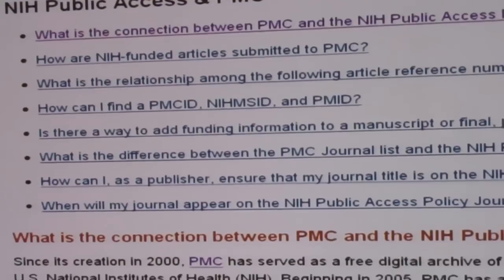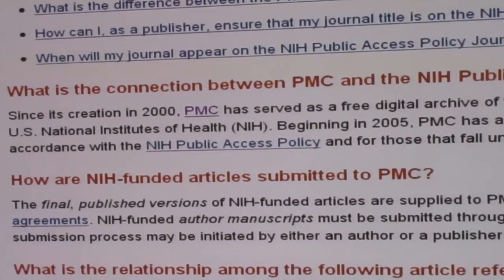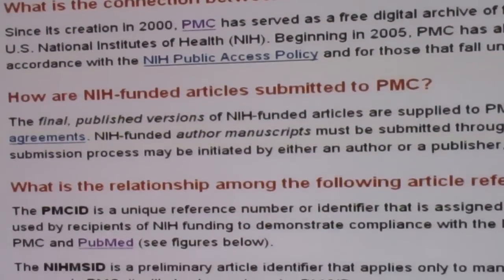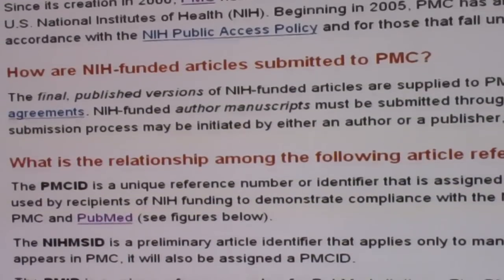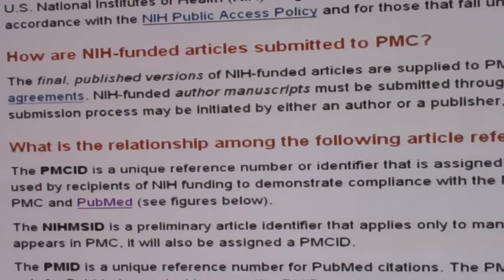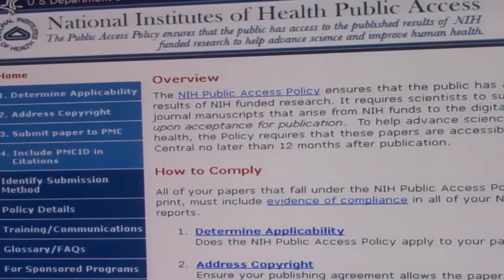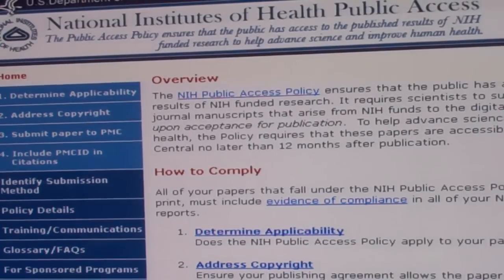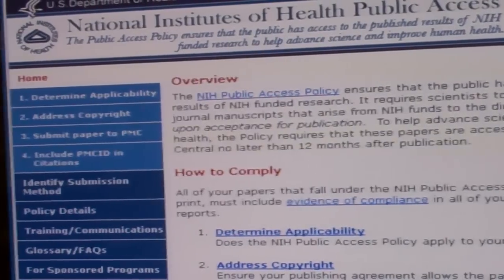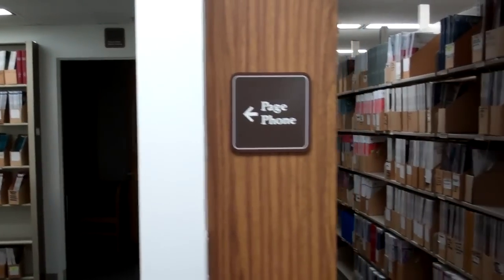PubMed Central is a familiar example of OA. It currently houses full text for more than 160 journals. Many of these are freely available elsewhere. However, PubMed Central stands to become even more important to the OA movement because under the NIH public access policy, it serves as the repository for publications resulting from NIH funded research.